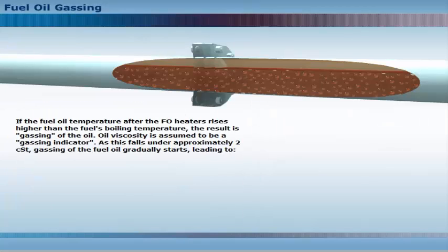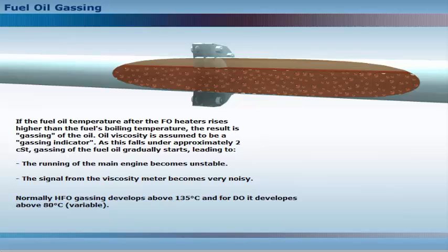If the fuel oil temperature after the fuel oil heaters rises higher than the fuel's boiling temperature, the result is gassing of the oil. Oil viscosity is assumed to be a gassing indicator. As this falls below approximately two centistokes, gassing of the fuel oil gradually starts, leading to unstable running of the main engine. The signal from the viscosity meter becomes very noisy. Normally, heavy fuel oil gassing develops above 135 degrees Celsius, and for diesel oil, it develops above 80 degrees Celsius.